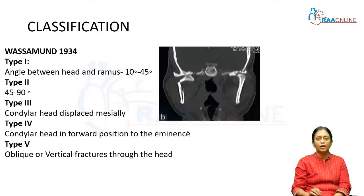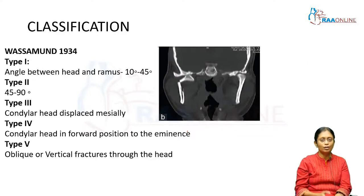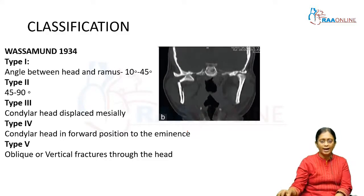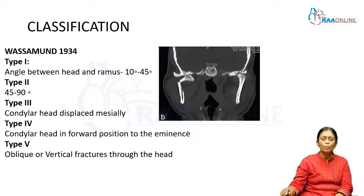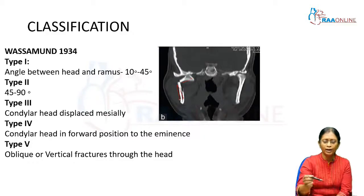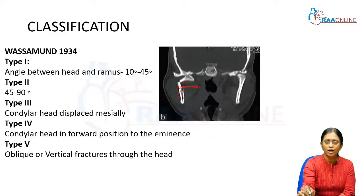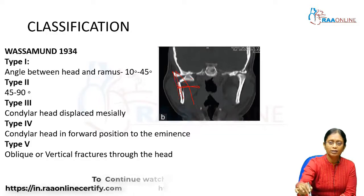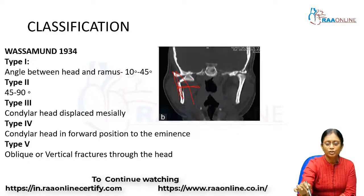According to Wasserman's classification from 1934, he classified Type 1 where the angle between the head and the ramus is around 10 to 45 degrees, based on how much displacement or deviation the fragment head has in relation to the ramus. If the condylar fragment head is at 90 degrees to the ramus, that is 90 degrees; if it is straight, that is 180 degrees.